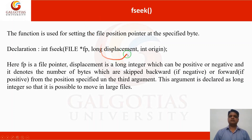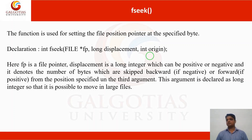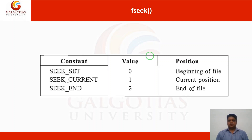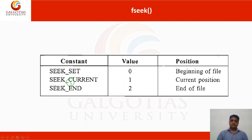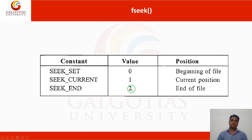The second argument is the displacement. The third one is the origin — where you are placed: beginning, current position, or end of file. In the stdio.h file you have three type of constants: SEEK_SET, SEEK_CURRENT, and SEEK_END. The value for SEEK_SET is 0, which denotes the beginning of the file; 1 denotes the current position; and SEEK_END with value 2 denotes the end of file.